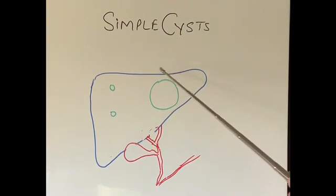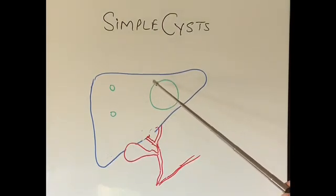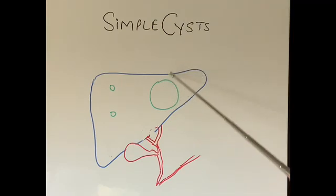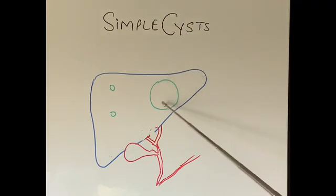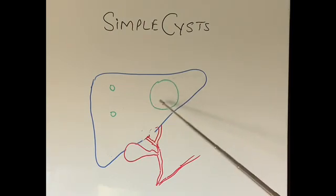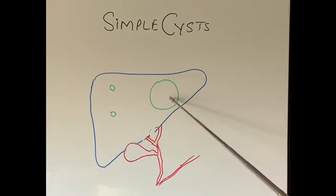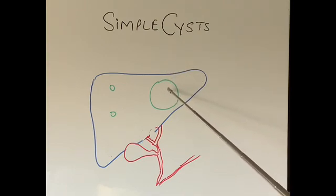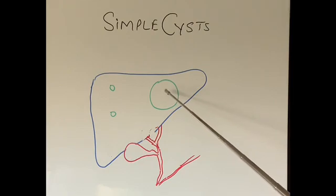Occasionally a very large cyst in the liver can cause pressure, discomfort, and pain, and will require treatment. One treatment is draining the fluid out with a needle and injecting a substance that makes the cyst wall stick together so the fluid does not recollect — if the fluid is taken out without injecting anything, it will recollect in a few days. Very occasionally, very large cysts may require surgery.